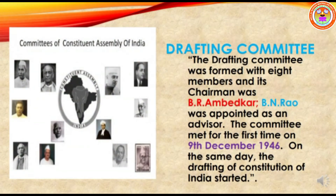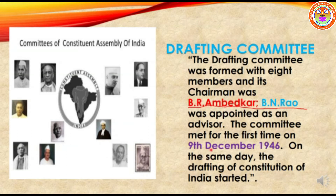The drafting committee — that is, the writing committee — was formed with eight members and its chairman was B.R. Ambedkar. B.N. Rao was appointed as an advisor. The committee met for the first time on 9th December 1946, and on the same day the drafting of the Constitution of India started.